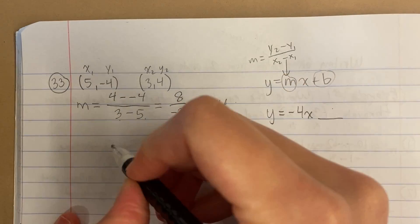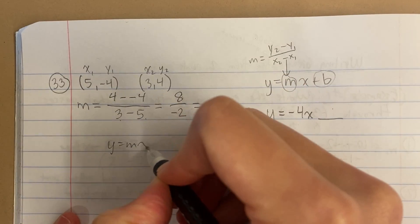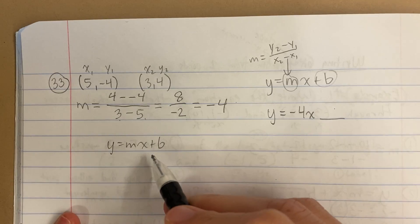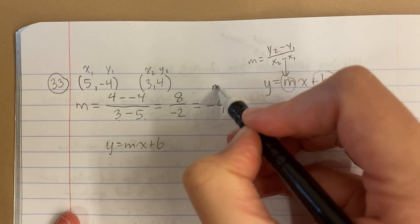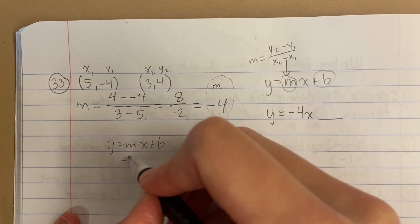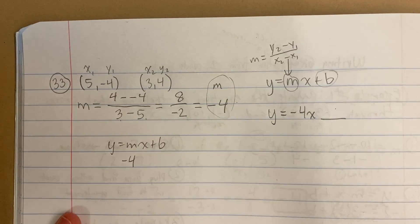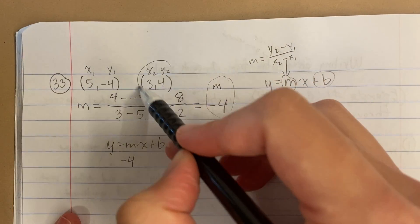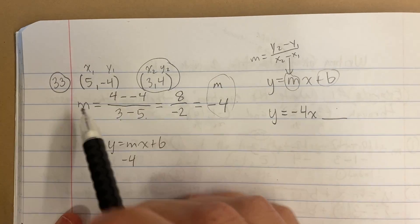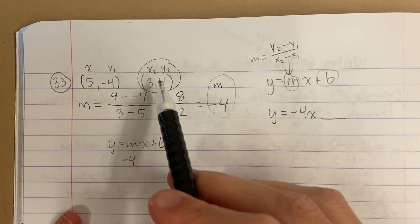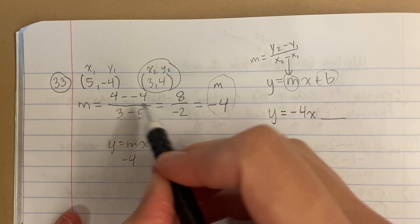I'm going to use my same equation, y equals mx plus b. I'm going to plug in what I know. Now I know the slope, and I can choose either one of these points. It doesn't matter which one, but let's just choose this one. Notice what I can't do is choose the x here and the y here, but I can choose one point, doesn't matter which one.